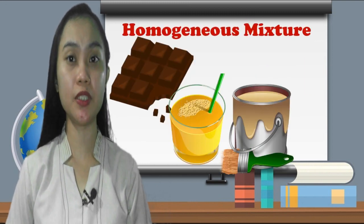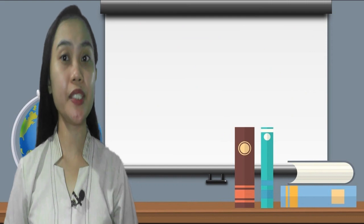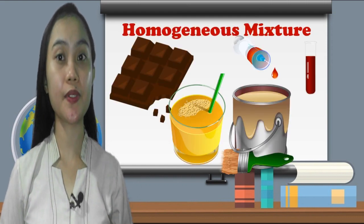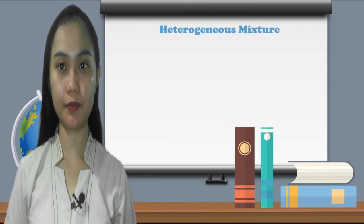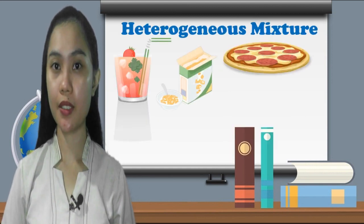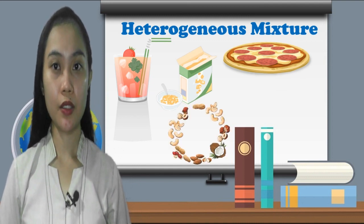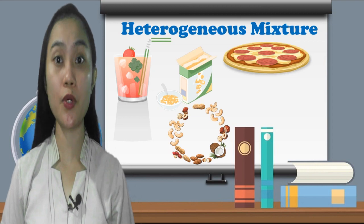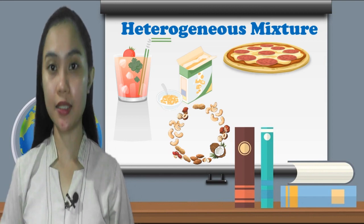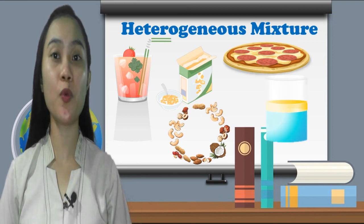Examples of heterogeneous mixtures include water with ice cubes before they melt, soda with ice, cereal in milk, various toppings on a pizza, toppings in a frozen yogurt, a box of assorted nuts, and a mixture of oil and water.